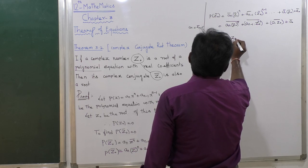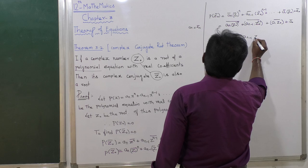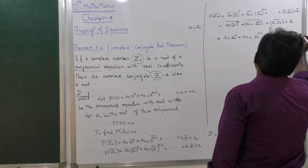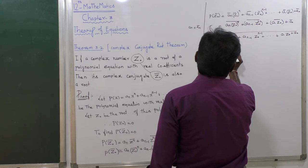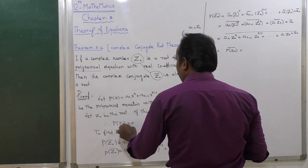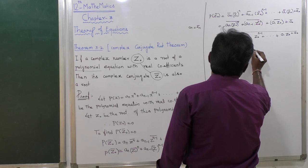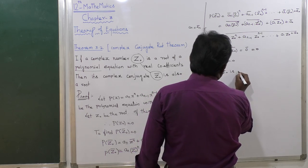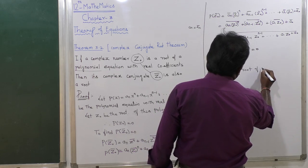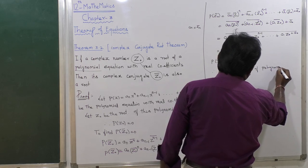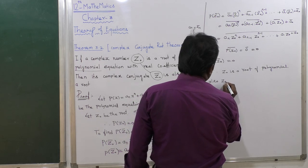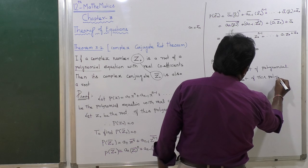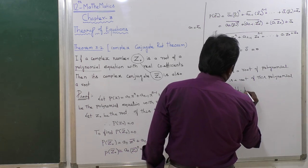So this simplifies to: aₙ z₀ⁿ plus aₙ₋₁ z₀ⁿ⁻¹ plus ... plus a₁ z₀ plus a₀, the whole bar — which equals p of z₀, the whole bar. Since z₀ is a root of the polynomial, p of z₀ equals 0, so p of z₀ bar equals 0-bar equals 0. Therefore z₀-bar is also a root of this polynomial. Hence the theorem is proved.